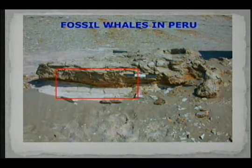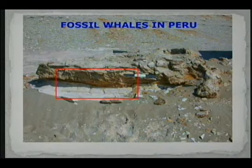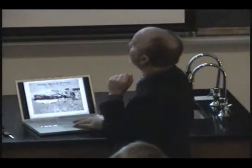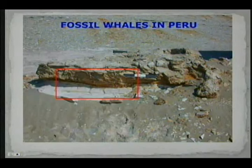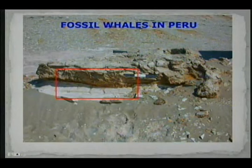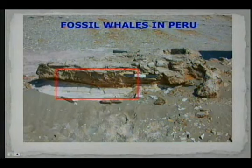We found many fossil whales with baleen preserved — not only preserved but in anatomical life position. Here these stripes are baleen, and this is the skull, the zygomatic arc, and the mineralized neck. When I found these first specimens I began to search the literature and visit museums — tens of museums in many countries — looking for fossilized baleen.